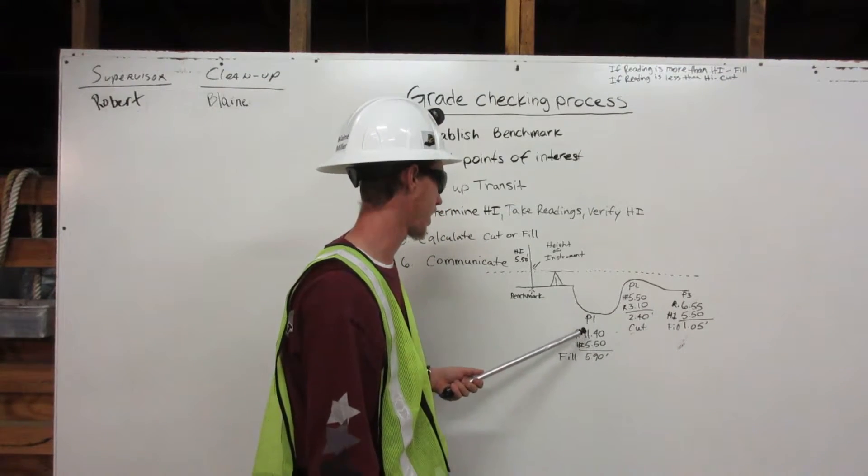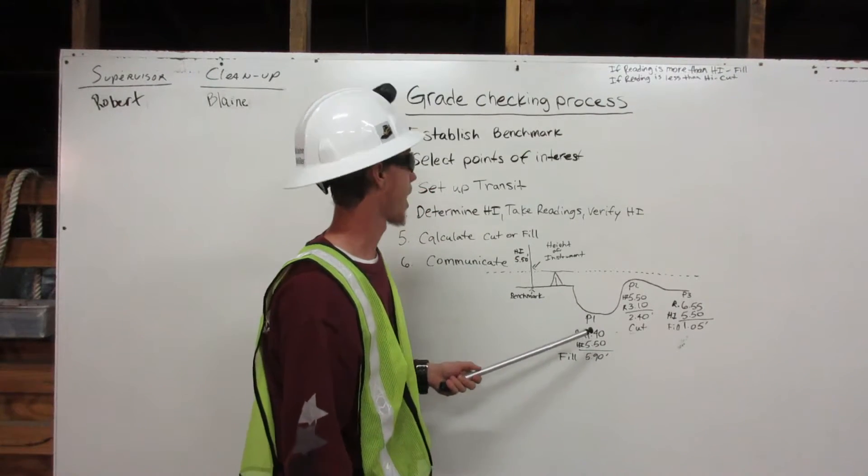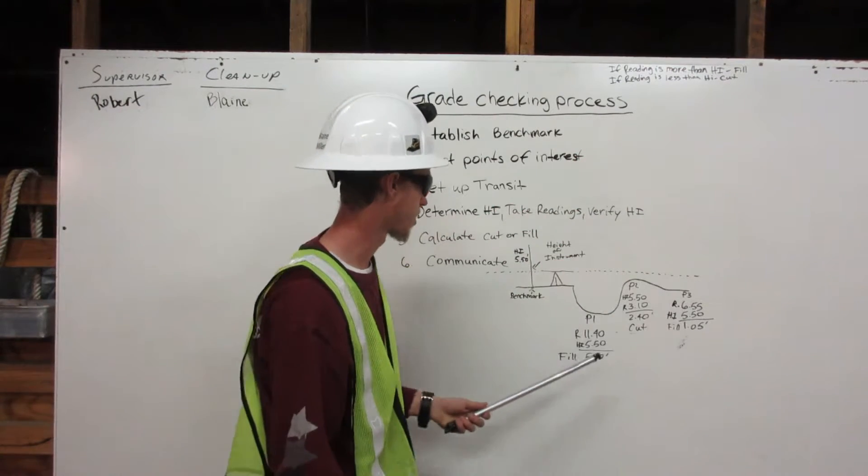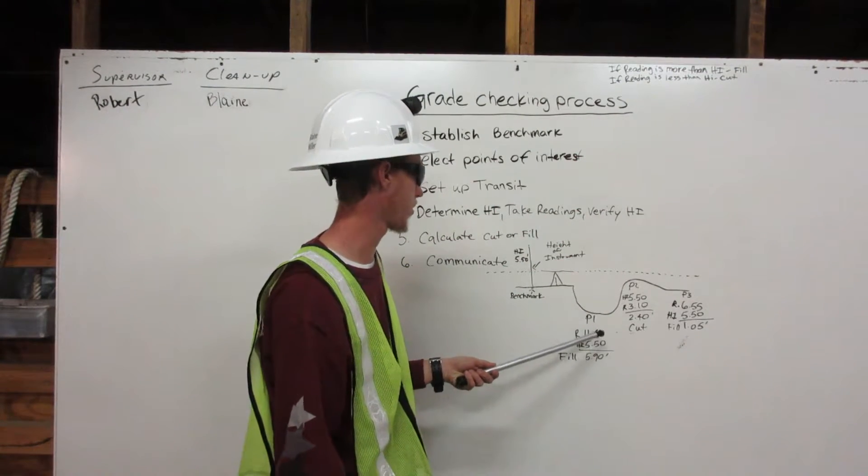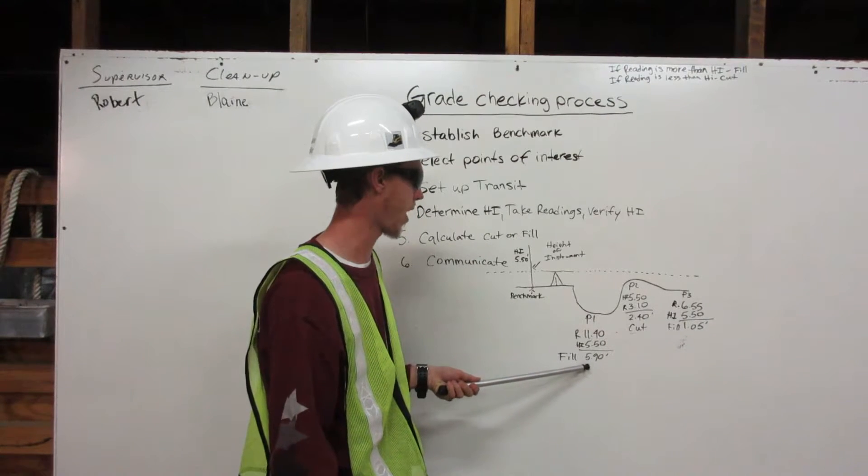Our first point, our reading is 11.40 feet. And we have a rule. If our reading is more than HI, we fill. So we are going to subtract 11.40 feet from 5.50 feet. We are going to get 5.90 feet, so we are going to fill.